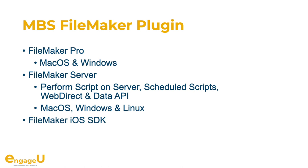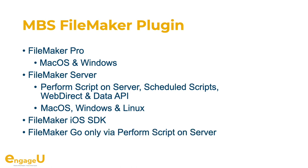You can use the plugin on iOS if you use the FileMaker iOS SDK to make your own branded version of FileMaker Go — use your own name and icon and then embed the plugin. If you use FileMaker Go, you can only use Perform Script on Server to trigger scripts on the server and use the plugin there. For example, to make a barcode on the server and then show it on FileMaker Go.